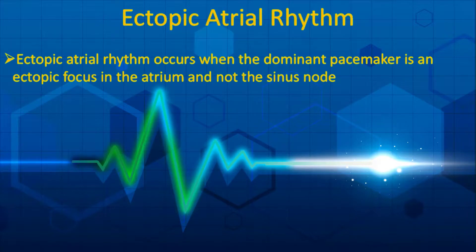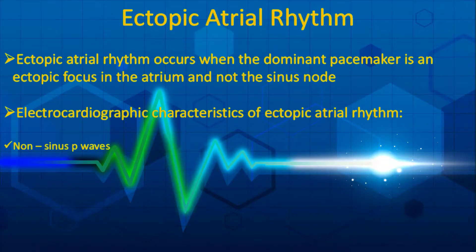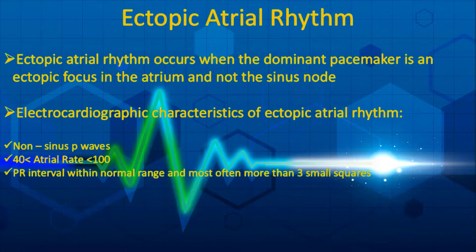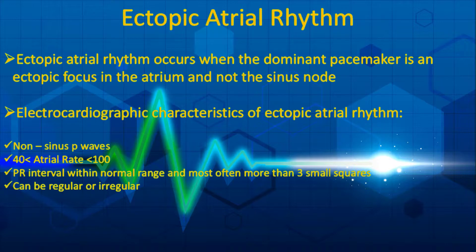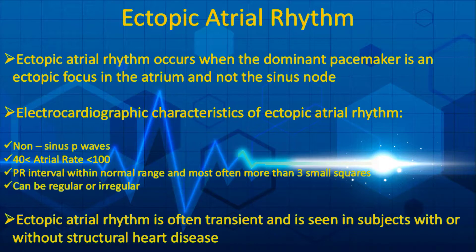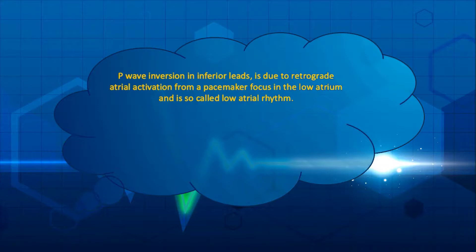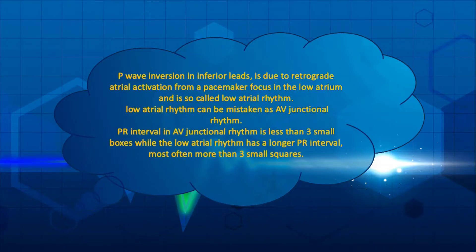Ectopic atrial rhythm occurs when the dominant pacemaker is an ectopic focus in the atrium and not the sinus node. The ECG features are: (1) non-sinus P waves; (2) atrial rate ranging from 40 to 100 beats per minute; (3) PR interval within normal range, most often more than three small squares; and (4) regular or irregular rhythm. Ectopic atrial rhythm is often transient. P wave inversion in inferior leads, as in today's tracing, is due to retrograde atrial activation from a pacemaker focus in the low atrium — called low atrial rhythm. It can be mistaken for AV junctional rhythm; remember that the PR interval in AV junctional rhythm is less than three small boxes, while low atrial rhythm has a longer PR interval, most often more than three small squares.